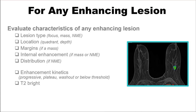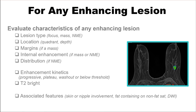Is the lesion T2 bright? And finally, any associated features — is there skin or nipple involvement? Does it contain fat on the non-fat-saturated sequence? What are the diffusion characteristics if DWI sequences were performed?